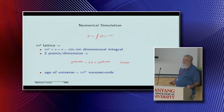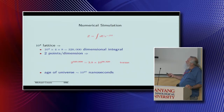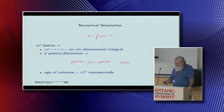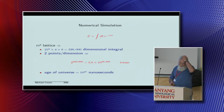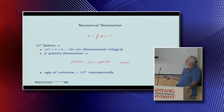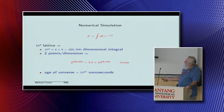Now, this brings us to numerical simulation. We've written the partition function as an integral over a bunch of group elements — it's just an ordinary integral, so let's go do it. Well, that gets a little tricky because, say, we have a 10^4 lattice: that's 10^4 times four directions times eight variables for each SU(3) element — a 320,000-dimensional integral. If you even just took two points in each dimension, you've got 2^{320,000} terms to add up, which works out to 10^{96,329} terms. The age of the universe is only 10^{27} nanoseconds, so you really can't do this directly.